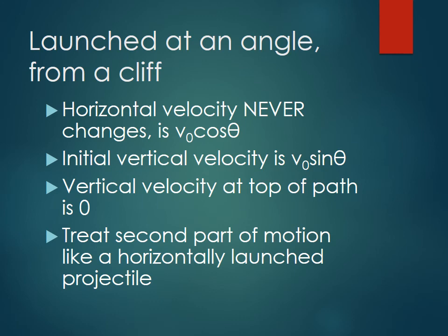However, you have to treat the second part of motion like a horizontally launched projectile. It has that same horizontal velocity that never changes through the whole problem. But since the height it goes up initially is not equal to the height it falls, essentially the second part of the motion is a horizontally launched projectile because there's zero vertical velocity at the top. Next we'll walk through some sample problems.